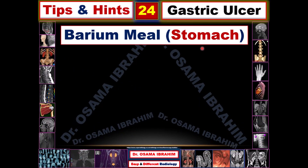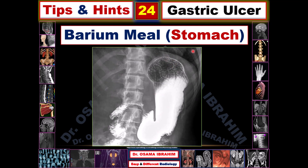First of all, the barium meal of the normal stomach appears like this image. The patient drinks the barium solution, and this study can be done in single technique or double contrast technique like this one. This one is double contrast because there is air and fluid, and the air can make the mucosa more distinct and better defined than the single technique.